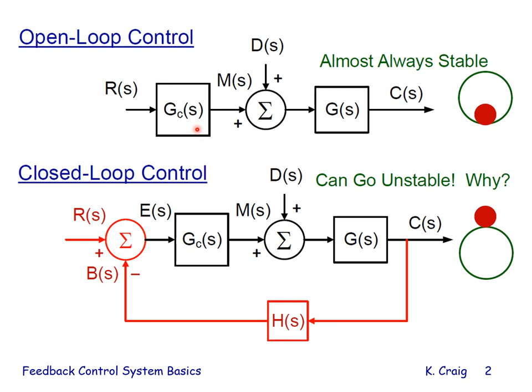Both diagrams have a controller G sub C, which we design so that the control variable C will follow the reference input R. The same applies to both the open-loop and closed-loop system. In the open-loop system, we do not measure the control variable, and we rely on the reference input being somewhat constant, not changing very much. We also rely on the performance specifications not being very stringent and disturbances not being too great.